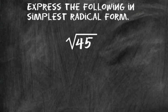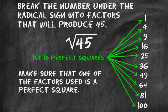In this tutorial, we are going to practice taking radical expressions and expressing them in simplest radical form. We are going to start out with the example of the square root of 45. The first thing we have to do is break 45 into two factors that will produce 45, but one of the factors has to be a perfect square.